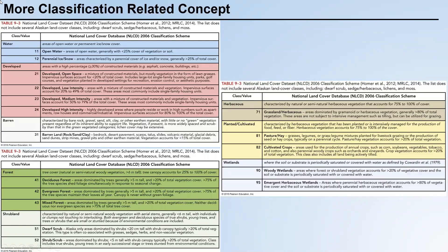Here is a table for the NLCD 2006 classification scheme. There are larger categories — for example, water, developed, barren — and under each larger category there are subcategories. Code 1-1 is for open water, code 1-2 is for another type of water such as snow or ice. These tables can be very large because the federal government must cover all possible land cover and land use within the country.